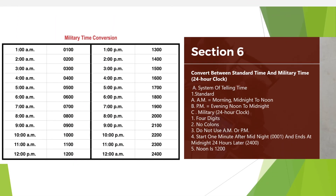Section 6: Military Time Conversion — convert between standard time and military time, the 24-hour clock. The standard system uses AM (midnight to noon) and PM (noon to midnight). Military time uses a 24-hour clock with four digits, no colons, and no AM or PM. It starts one minute after midnight at 0001 and ends at midnight 2400 hours. Noon is 1200 hours. Refer to the corresponding chart for time conversions.